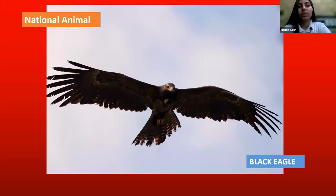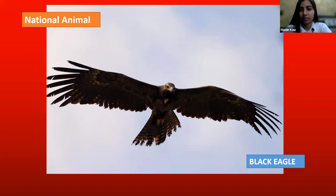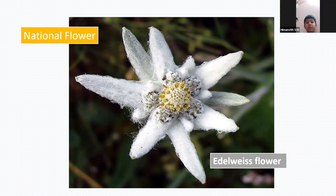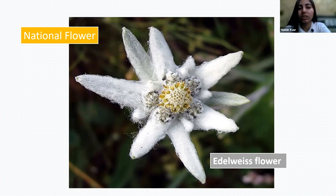The national animal of Austria is the Black Eagle. The national flower is the Edelweiss flower. Have you seen this flower before? This flower is usually found in this place, and it is the national flower of Austria.